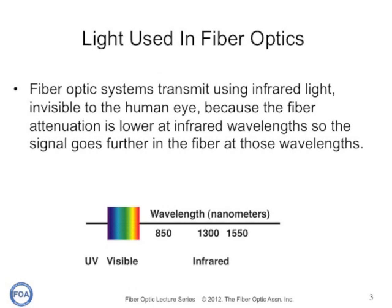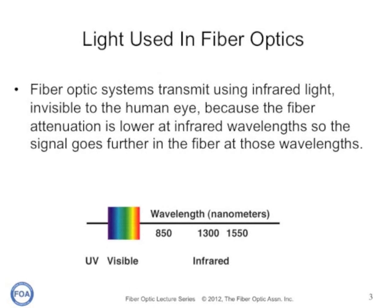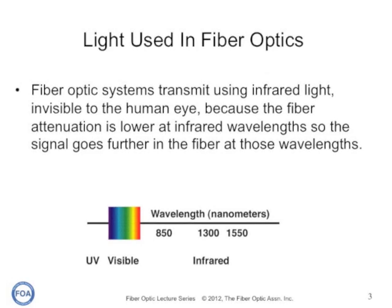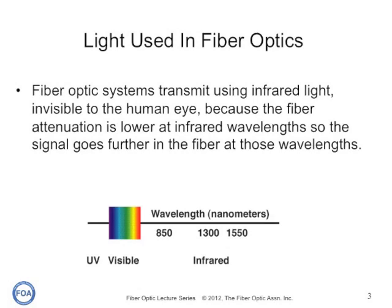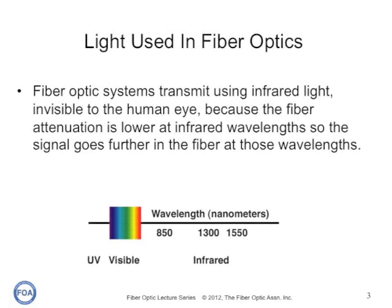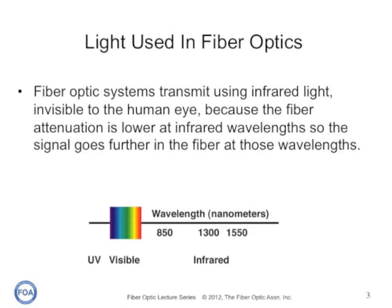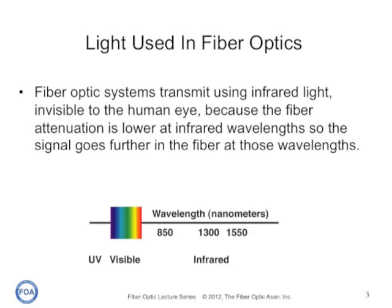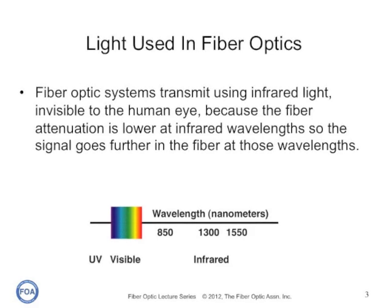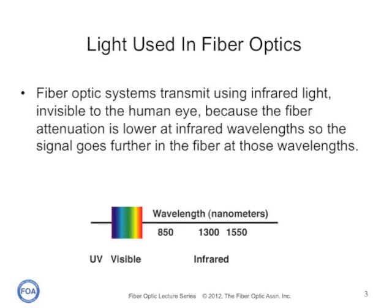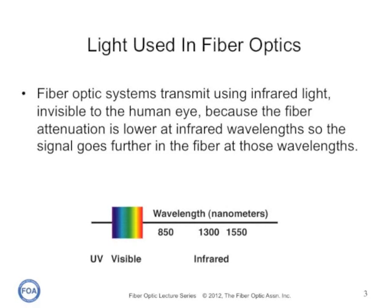The ultra-pure glass used in making optical fiber has less attenuation, or signal loss, at wavelengths in the infrared — beyond the limits of the sensitivity of the human eye. The fiber is designed to have the highest performance, bandwidth, or signal capacity, at these wavelengths.